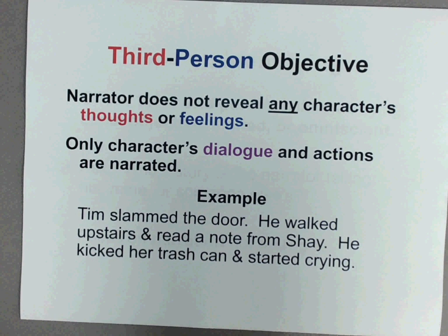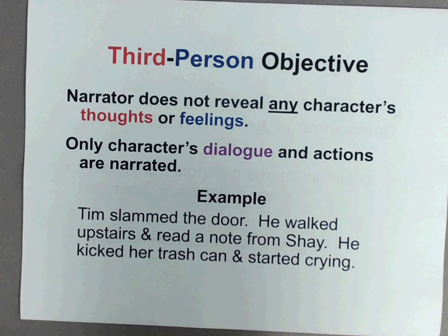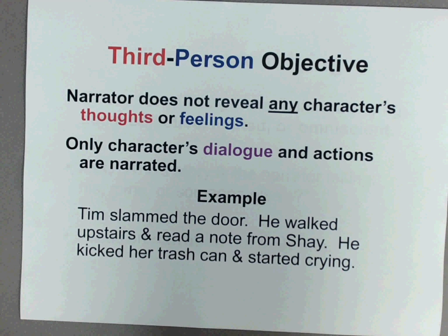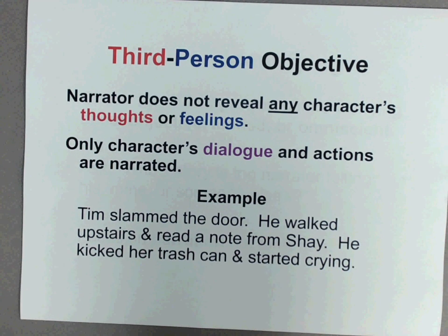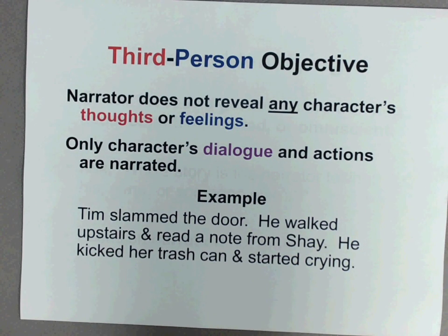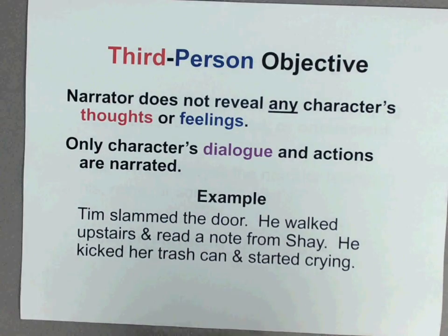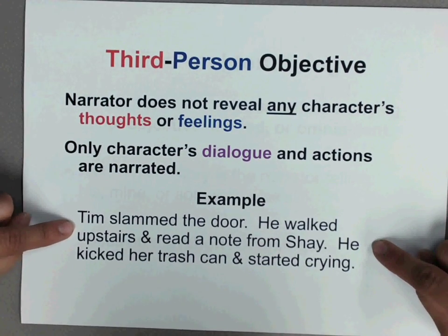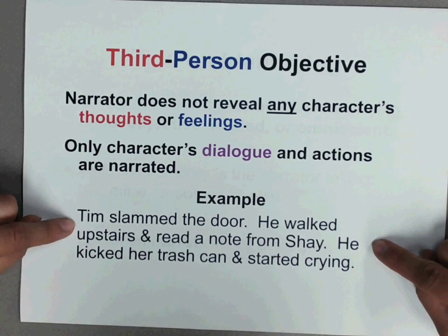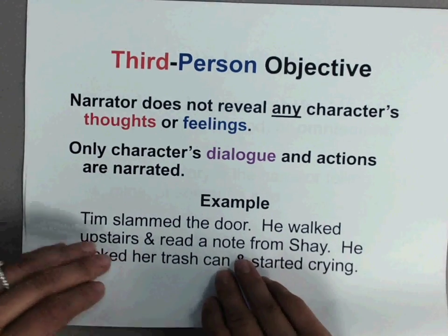The last one is third person objective. The narrator does not reveal any character's thoughts or feelings. Only characters' dialogue and actions are narrated. For example: "Tim slammed the door. He walked upstairs and read a note from Shay. He kicked her trash can and started crying." So we don't know either Tim's nor Shay's thoughts or feelings — we just know their actions. That's third person objective.